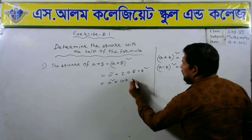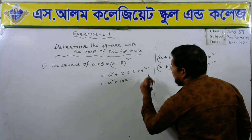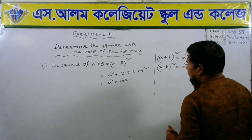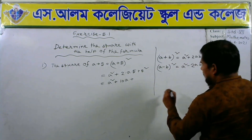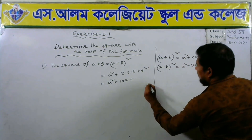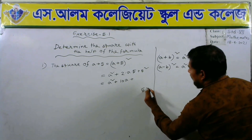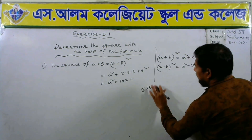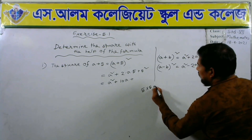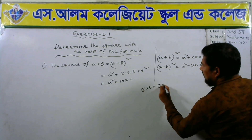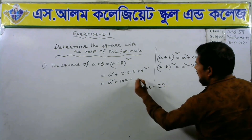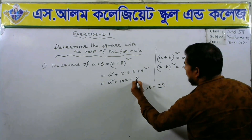5 square means 5 into 5 equals 25. So we can write 25. The answer is a square plus 10a plus 25.